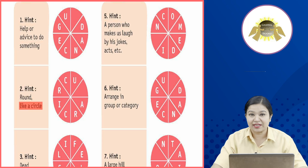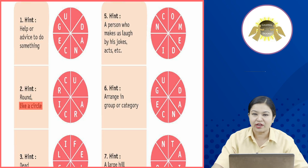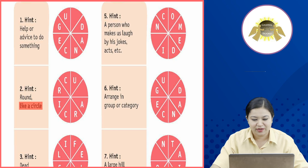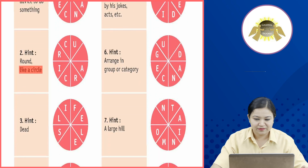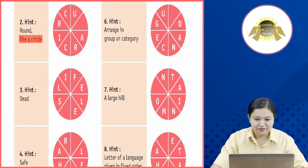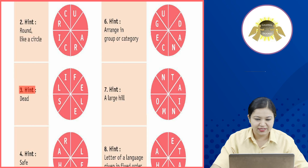Second hint: round like a circle. एक circle की तरह round, तो वो circular होता है। तो आप यहां पर 'circular' लिखेंगे — missing letter जो है, वो L है, यहां पर L लिखेंगे।